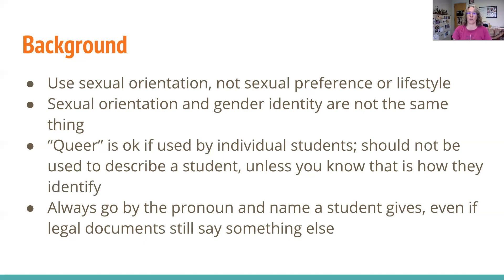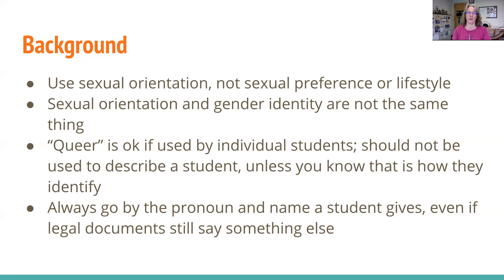That is a way of honoring the student. Students who are in transition may be working through this at a young age — too young for sex reassignment surgery. But there are beta blockers that can help children before puberty. Children often know their gender identity by the age of three.